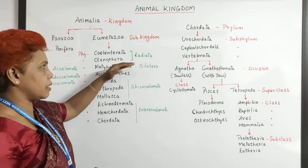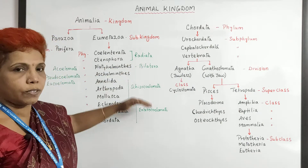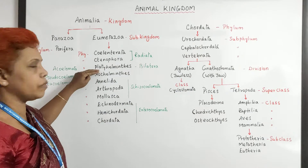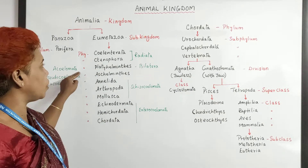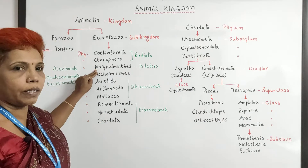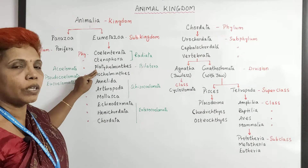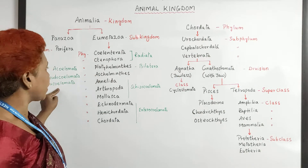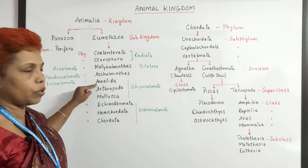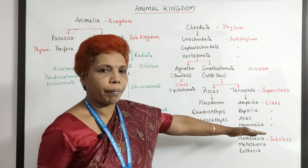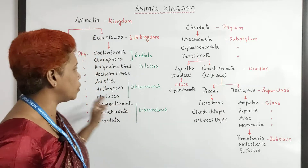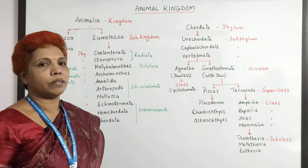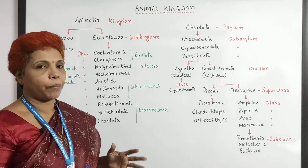When you come down to bilateral symmetry, the primitive kind is acoelomate — Platyhelminthes — and then pseudocoelomate — Aschelminthes — and then eucoelomate from Annelida to Mammalia, where true coelom and the body cavity is formed.